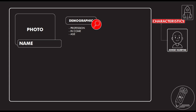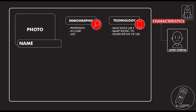Then comes the demographic section — the person's profession, what they do, their income, and their age. Depending on the kind of project you are developing, it's very important to note if they have a smartphone, if they use a PC, how many hours a day they use it, and what kind of device they use. Nowadays, every technological component is very important for defining a communication channel or strategy.